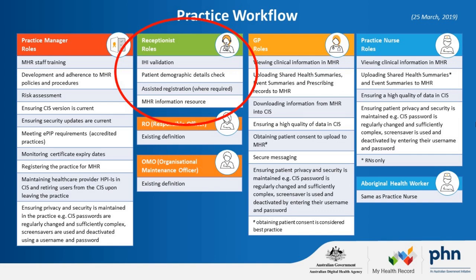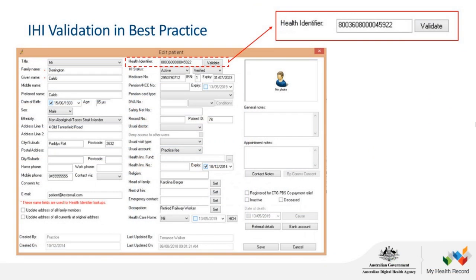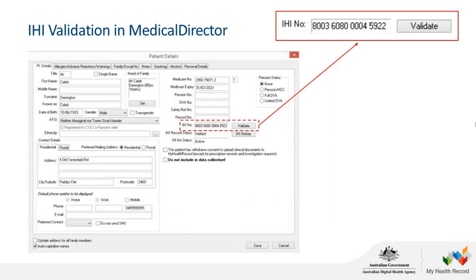One of the receptionist roles is to make sure that the patient's IHI is validated in the demographic data. This is important to enable access to the My Health Record. You should do this when you arrive your patient and check their Medicare details. It is easy to check if the health identifier is present — if not, simply select Validate. We have an example here showing where the IHI is located in Best Practice. In Medical Director, the IHI is normally automatically entered, however it is important to know how to validate should you need to.